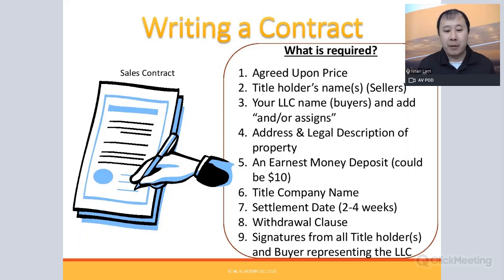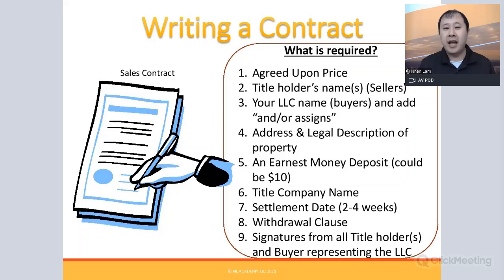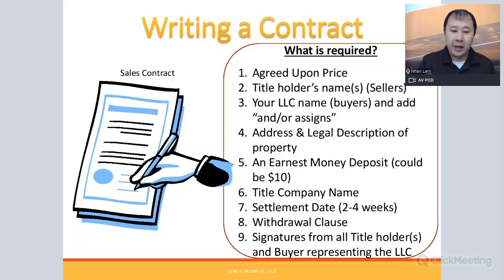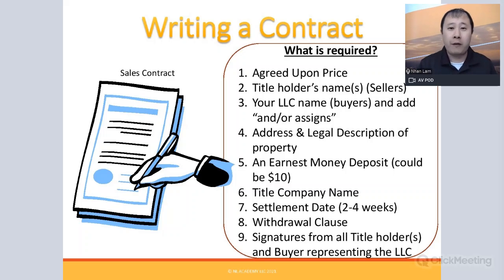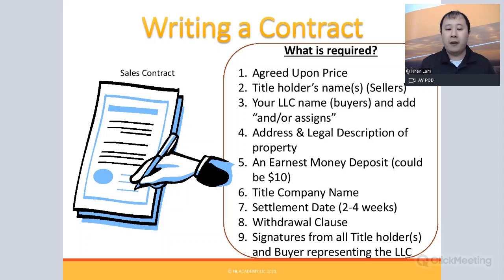The earnest money deposit can be as little as $10 — don't put in more than necessary. Use a title company that is investor-friendly and has experience with contract assignments, or they may jeopardize your deal. The settlement date is a key value proposition: you close fast — within two weeks or less — because the buyer doesn't need a mortgage, home inspection, or appraisal. Include a withdrawal clause and signatures from all title holders and your LLC representative.